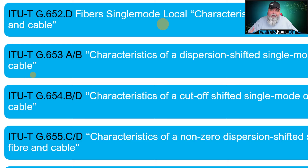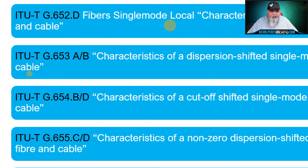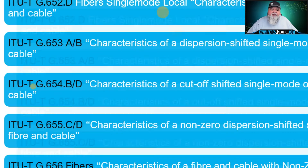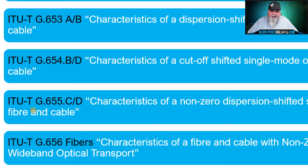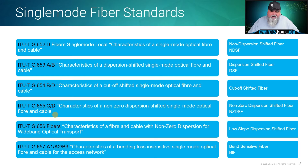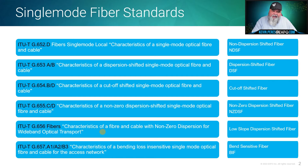G.653 is dispersion-shifted fiber, optimized for 1550nm. We don't use it for DWDM at all, it suffers from non-linear issues, and it's essentially not being manufactured anymore. G.654 is seen a lot in the submarine environment. G.655 is non-zero dispersion-shifted fiber, optimized for DWDM transmissions. G.656 is also a DWDM glass but has a lower dispersion slope, allowing more channels. G.657, at the bottom, is bend-sensitive fiber with different categories.